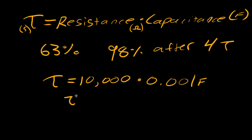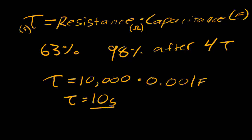So tau equals 10,000 ohms × 0.001 Farads, giving a time constant of 10 seconds. In this scenario, with 10,000 ohms of resistance and a 1,000 microfarad capacitor, it will take about 10 seconds for the capacitor to charge to 63% of its voltage. It should be almost fully charged after four tau periods — so fully charged after tau × 4, or 40 seconds, of being connected to your voltage source. This is a pretty extreme example, but that's how you estimate the time for a capacitor to get fully charged.